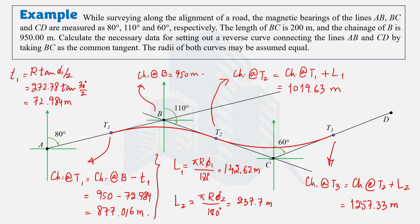We have now calculated all the basic data needed to set out the reverse curve — the radius of both curves, the deflection angles, and the chainages at T1, T2, and T3. The next step is to set out the curve using a method such as the deflection angle method or the long chord offset method. The rest of this example will be solved in the next video. Thank you for watching.